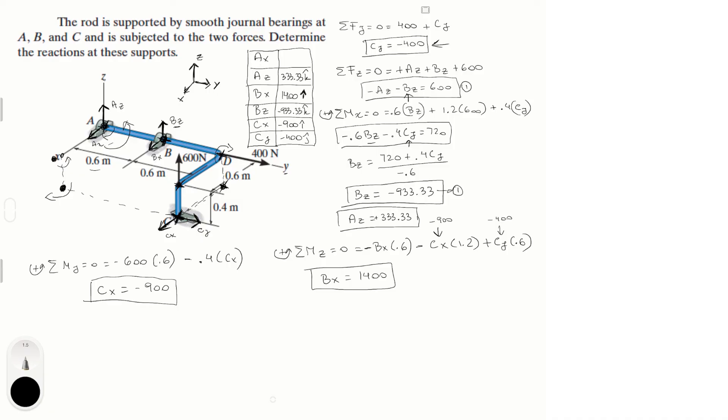Last but not least is AX. Let's do a simple sum of the forces in the x. We get that AX plus BX plus CX equals zero. Solving for AX, AX equals minus BX minus CX. BX is 1400 with a minus, and CX is positive 900 because it's negative 900 times negative. So AX equals minus 500 in the i.